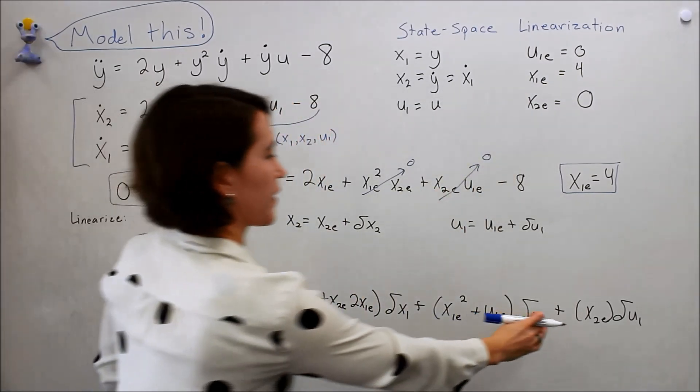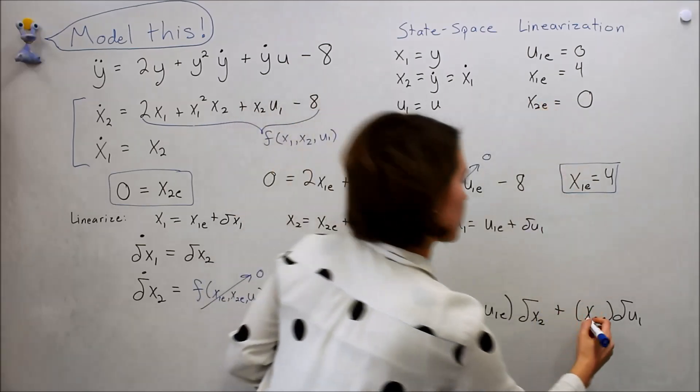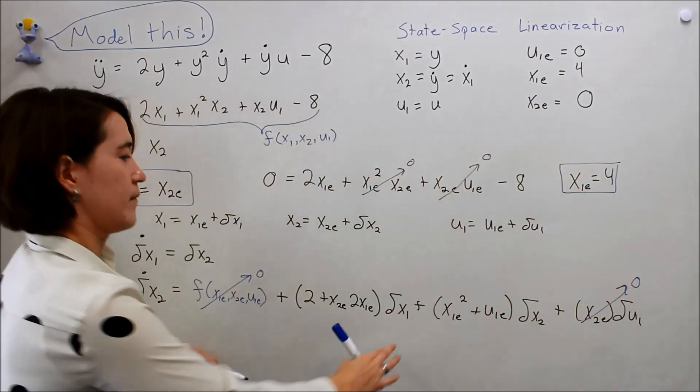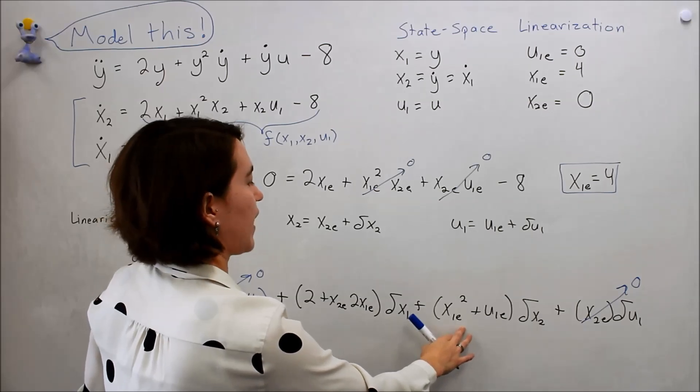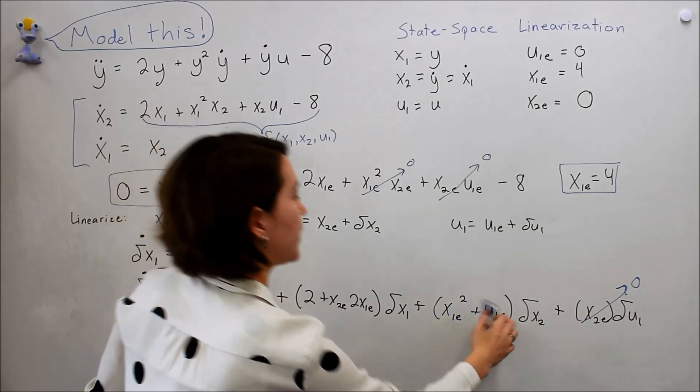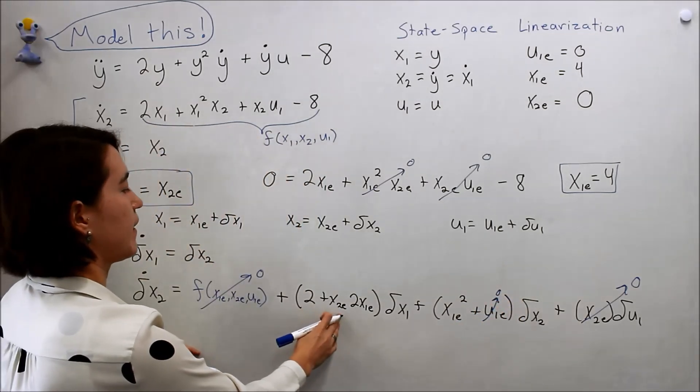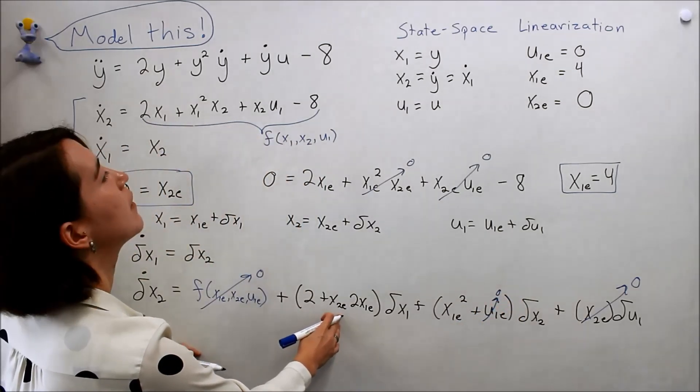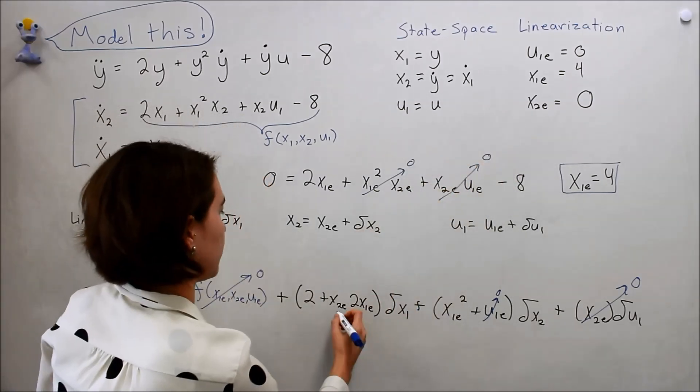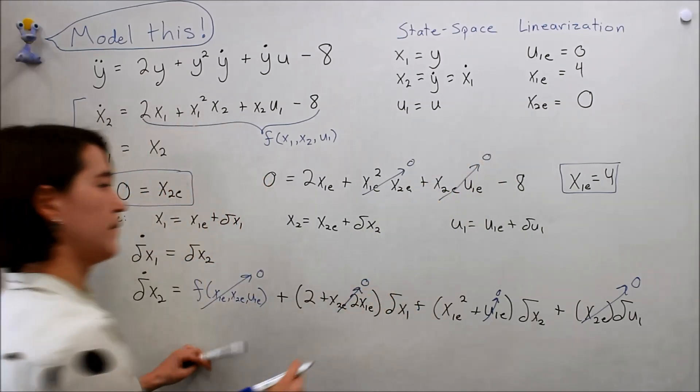Let's start over here. x2e is zero, so this term just goes away. x1e does have a value, and ue is zero, so this one will go to zero. And this one, we have x2e is zero, so this also goes to zero.